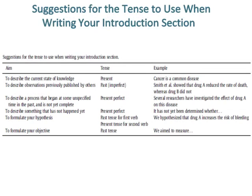Suggestions for the tense to use when writing your introduction section. To describe the current state of knowledge, use the present tense — for example, 'cancer is a common disease.' To describe observations previously published by others, use the past tense — for example, 'Smith et al. showed that drug A reduced the rate of death, whereas drug B did not.' To describe a process that began at some unspecified time in the past and is not yet complete, use the present perfect — for example, 'several researchers have investigated the effect of drug A on this disease.' For something that has not happened yet, also use the present perfect — for example, 'it has not yet been determined whether.' To formulate your hypothesis, use the past tense for the first verb and present tense for the second — for example, 'we hypothesise that drug A increases the risk of bleeding.'